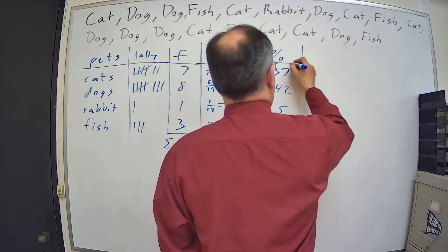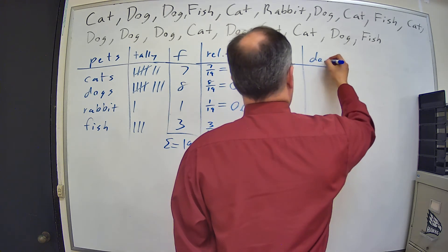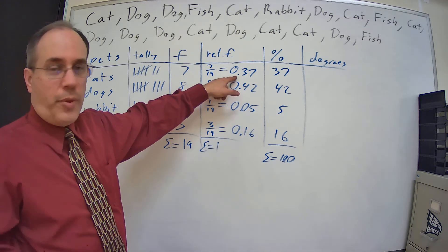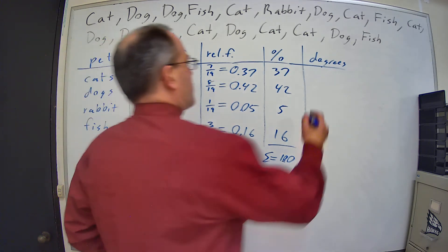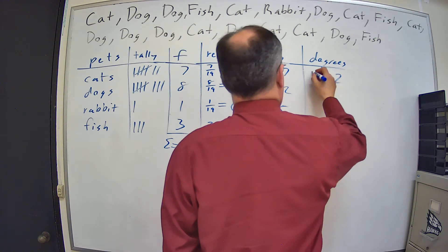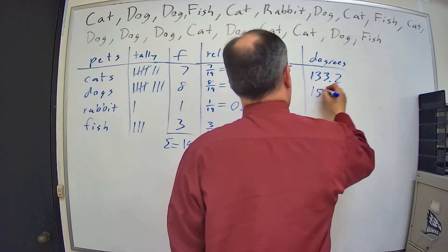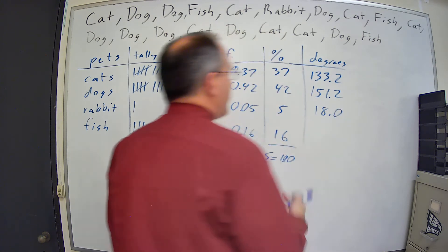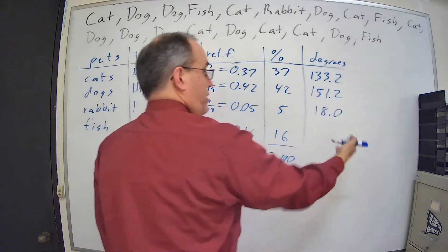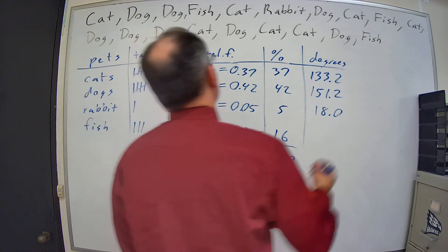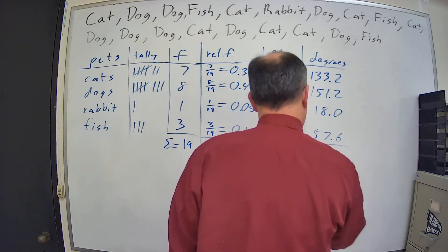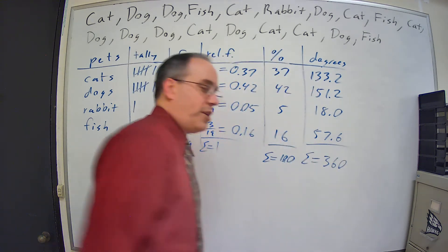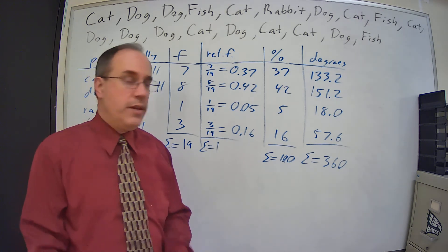And then we're going to have degrees, which is just take the relative frequency and multiply it by 360, which gives us 133.2, 151.2, 18.0. Yeah, it was just 18, but I put the .0 because everything else had a decimal place in there. And then 57.6, which if we add those up, comes out to be 360, which is what we want to see.